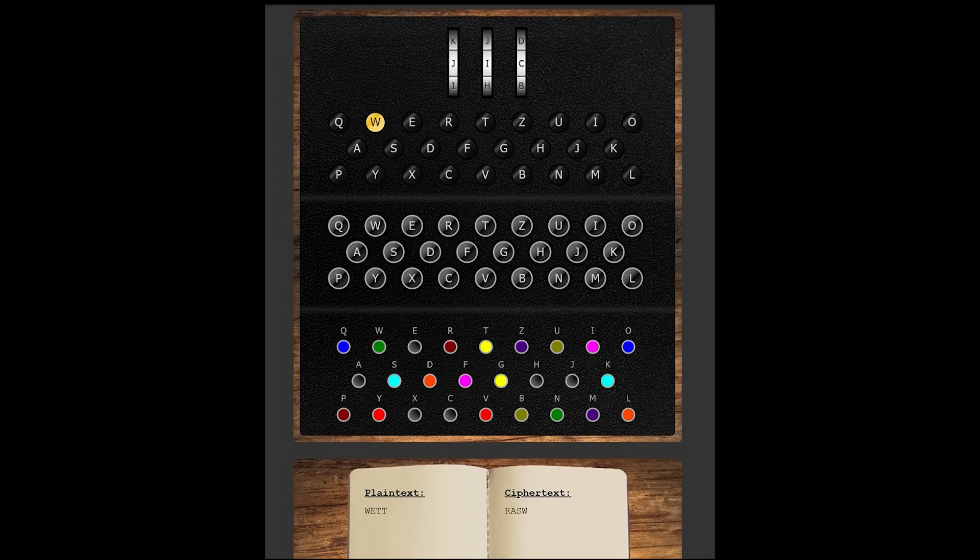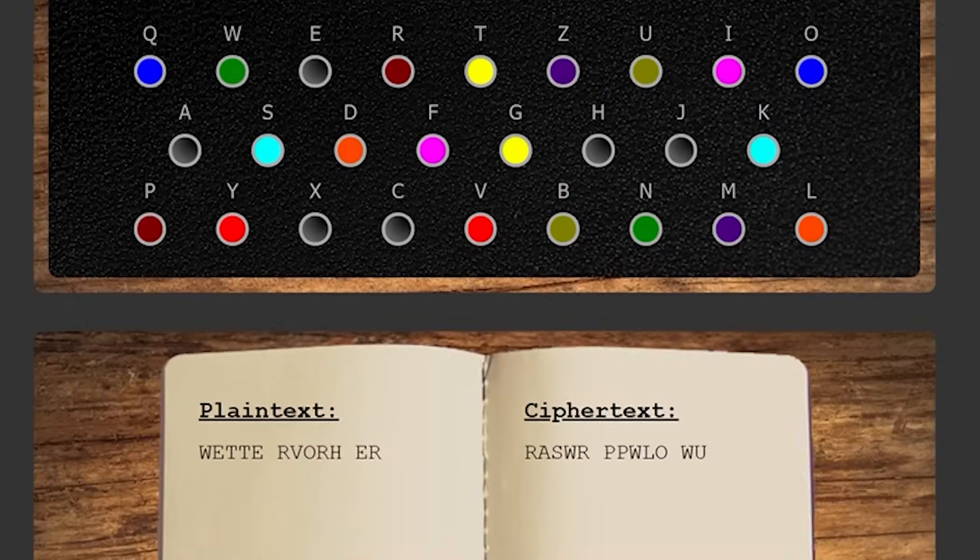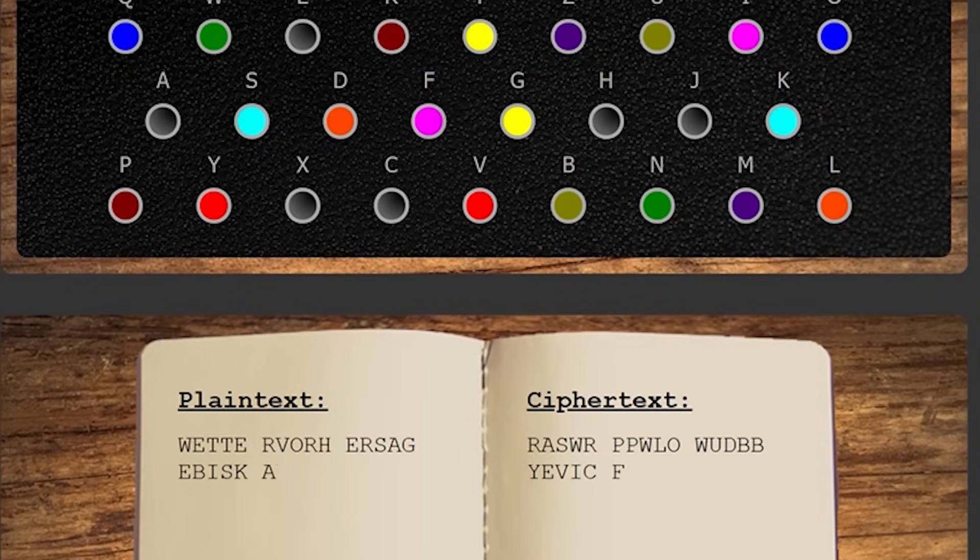This means Weather Forecast for Biscay maps to RASWR PPWLO WUDBB YEVIC FTQ.